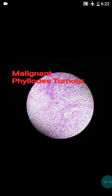Like fibroadenoma, there is a presence of benign glandular elements as well as stromal elements, making it a bimodal tumor. However, in the phyllodes tumor, stromal hypercellularity is the main feature — the stroma is very hypercellular compared to the glands, which is why it is called a phyllodes tumor.